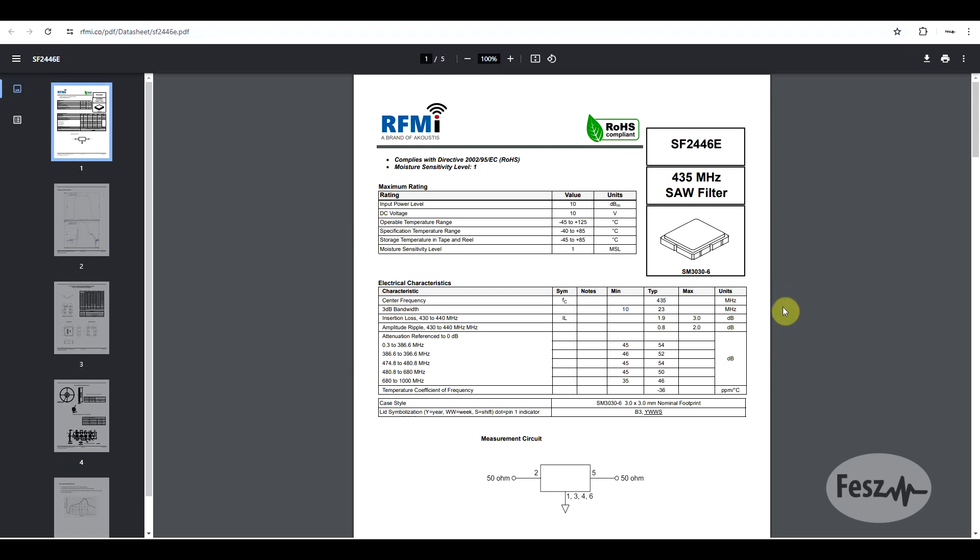If we look more closely at the various parameters, we will also see some of the limitations of this type of filter. The insertion loss in the pass band for this component can be as high as 3dB, but in other cases this value can become far larger. The other thing to keep in mind with SAW filters is the power handling capabilities. For this particular component, the maximum input power level is 10dBm or 10mW, which is not all that much.